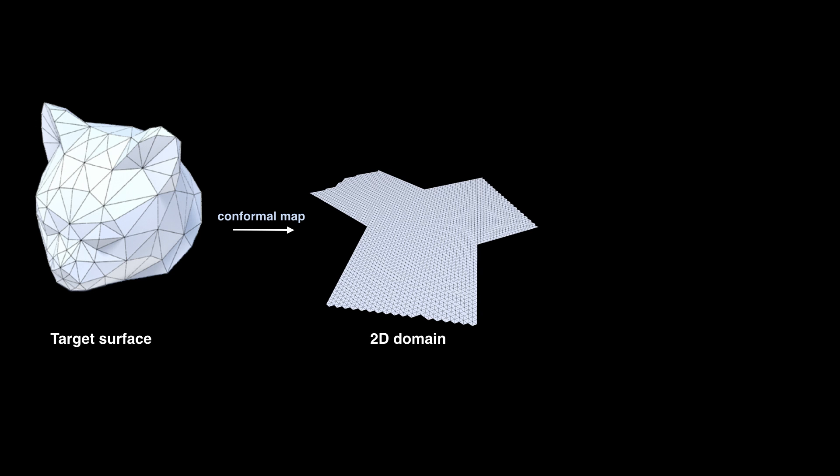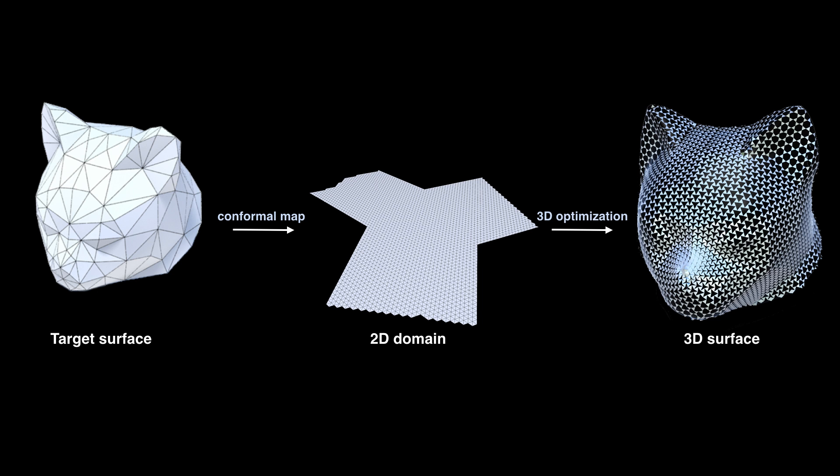We use the conformal mapping to take the auxetic linkage from 2D domain back to a 3D surface, and initialize the non-linear optimization solver. After some additional optimization steps, we get the final result.